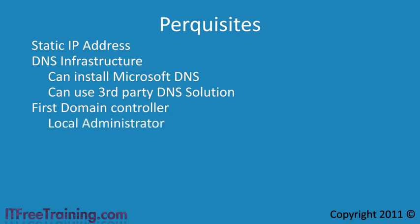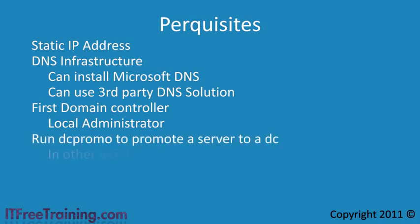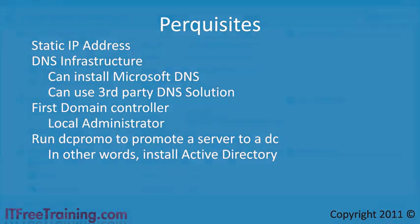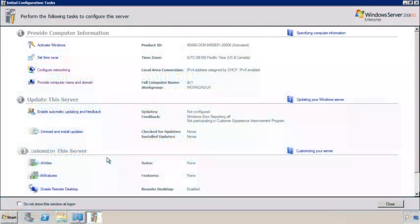Once you are ready to install your first domain controller or add an additional domain controller to any existing network, run the command DCPromo. The process of changing a server into a domain controller is called promotion. It is common for people to say 'I am going to promote this server to a domain controller.' I will now change to my Windows Server 2008 server to demonstrate the process of promoting a server to a domain controller.